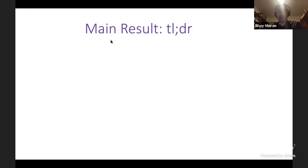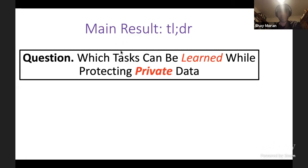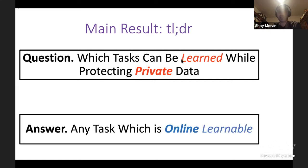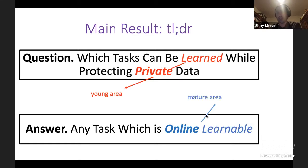The TL;DR of our main result: the question we ask is which tasks can be learned while protecting private data, and the answer is any task which is online learnable. Online learning is a mature area studied for several decades, while private machine learning is young — the definition of differential privacy is only about 15 years old, and the first paper in private machine learning was around 2010.